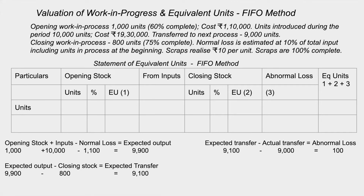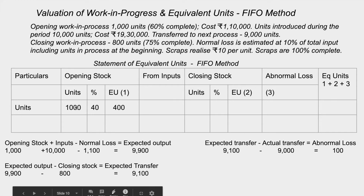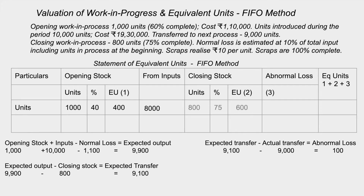Under FIFO method, we separate opening stock and current process inputs. First, for opening stock: already 60% complete, so this process needs 40% more. Equivalent units = 40% of 1,000 = 400 units. Next, for units transferred out: 9,000 units total. Since 1,000 came from opening stock, the remaining 8,000 came from current inputs. For closing stock: 75% complete, so equivalent units = 75% of 800 = 600 units.